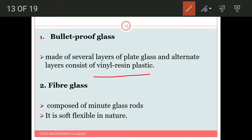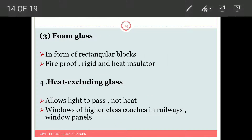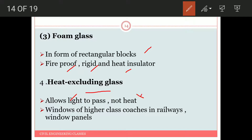Fiberglass is composed of minute glass rods; it is soft and flexible in nature. Firm glass forms rectangular blocks that are fireproof, rigid, and good heat insulators. Heat excluding glass allows the passage of light but not heat.